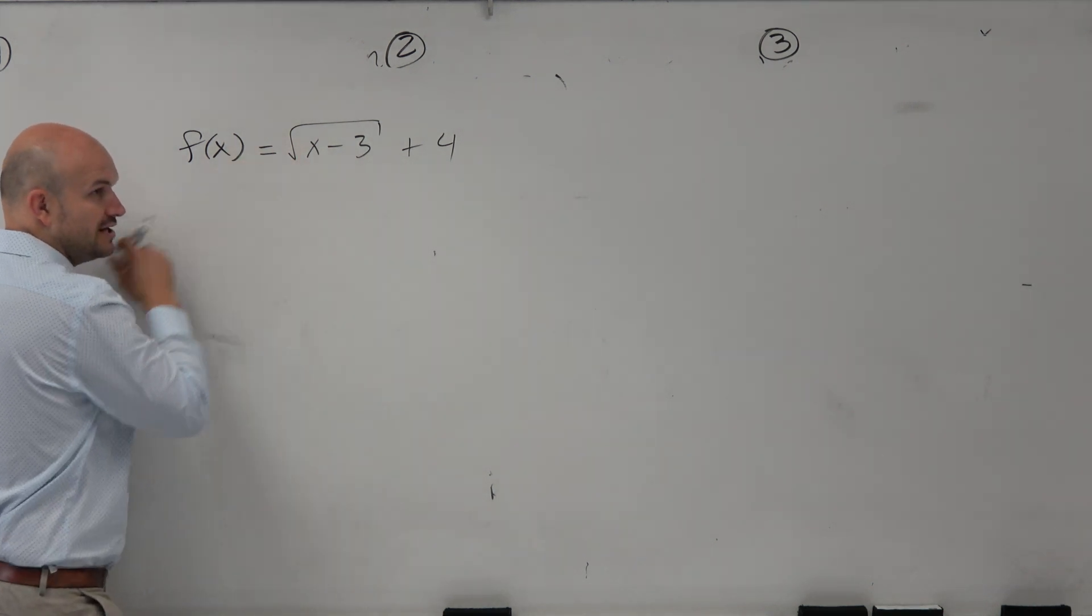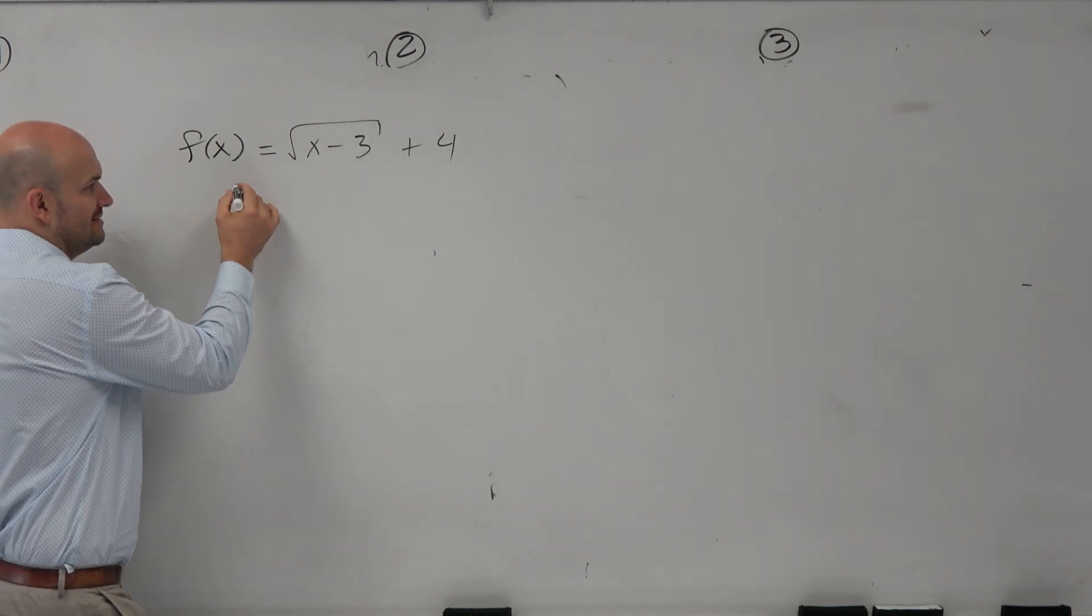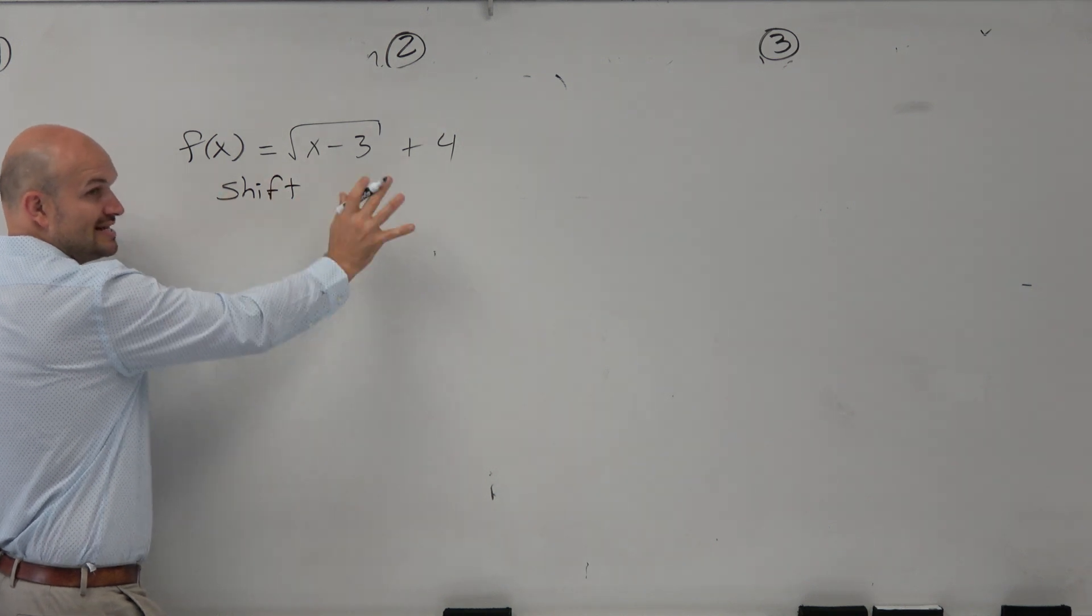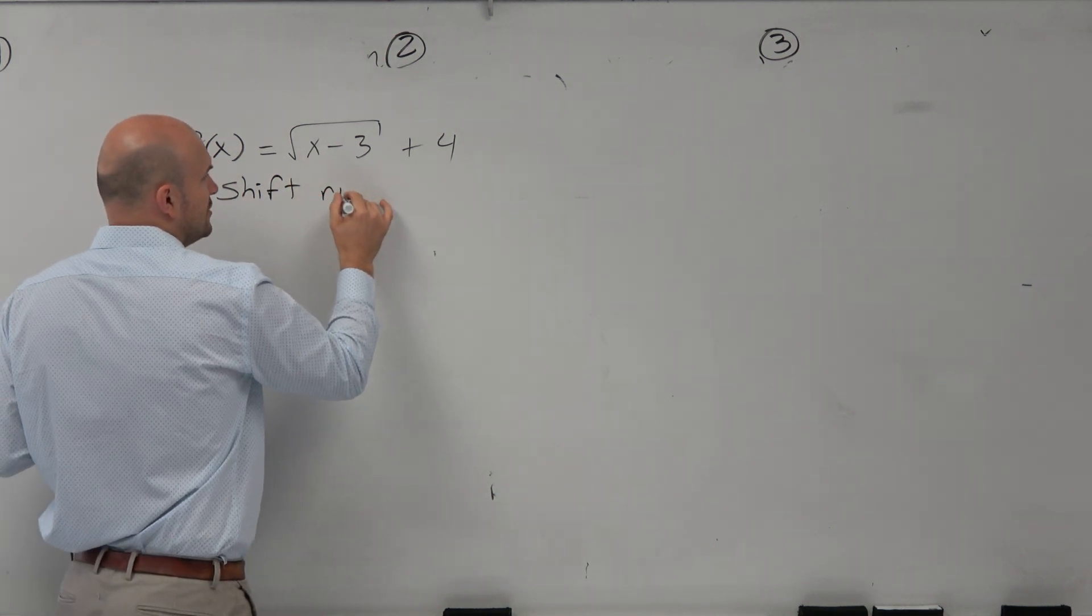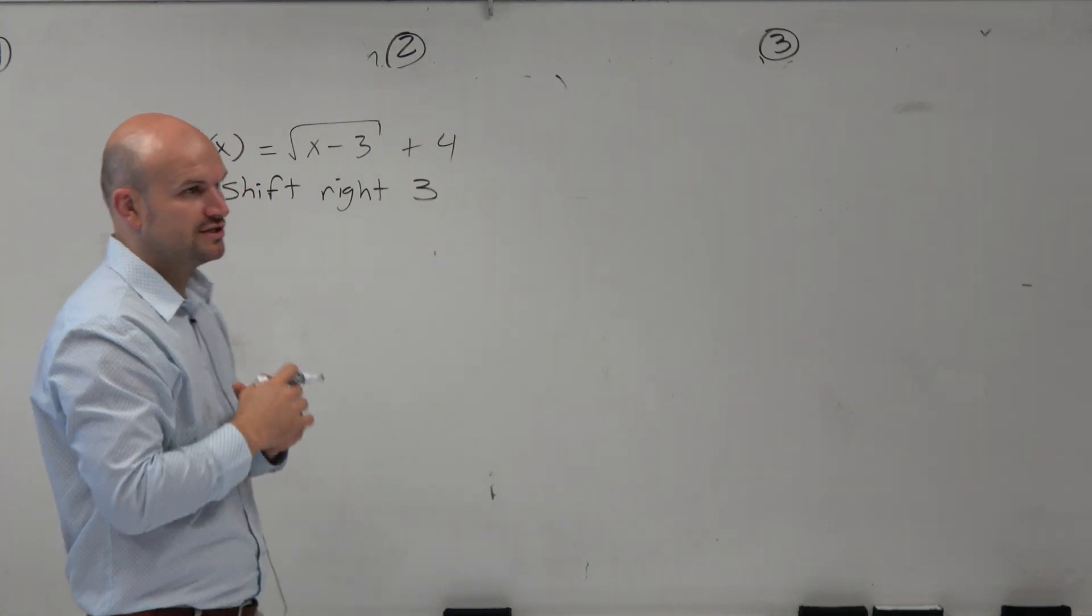So if we're subtracting the 3 inside the function, that tells us we're going to shift right. That is a translation. So it's going to be a shift right 3. That's going to take the graph 3 units to the right.